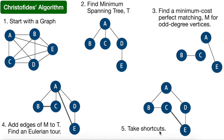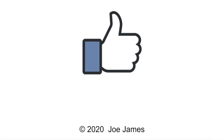The last step is to take shortcuts. We notice we're visiting A twice after leaving node C to get to E, so we shortcut from C directly to E. Our final tour is A, B, C, E, D, and back to A. That gives us our Hamiltonian cycle and concludes Christofides algorithm, which provides a 1.5 approximation. I hope this video was helpful — please click like and subscribe. I'm Joe James, thanks for watching.